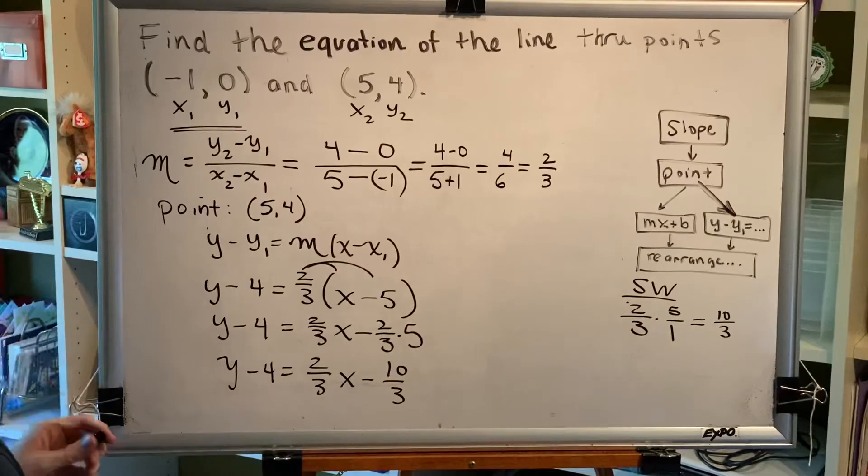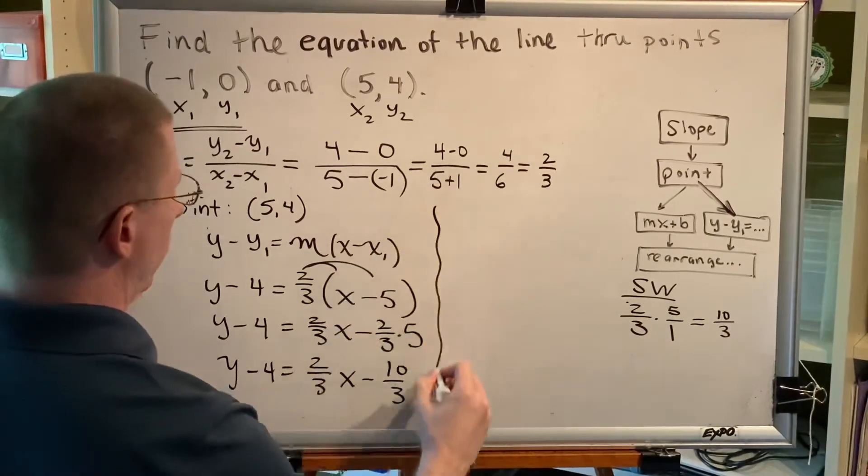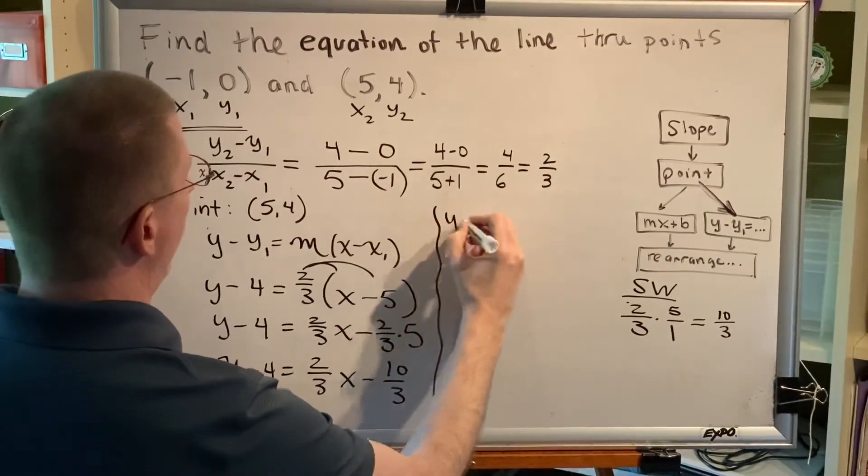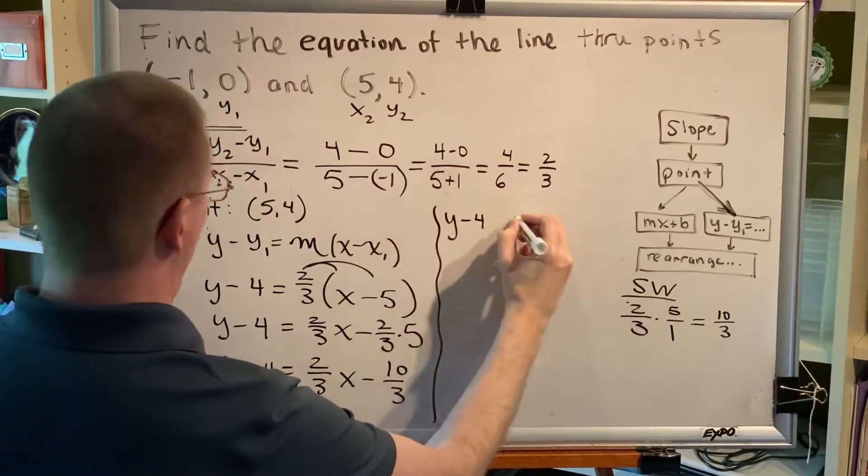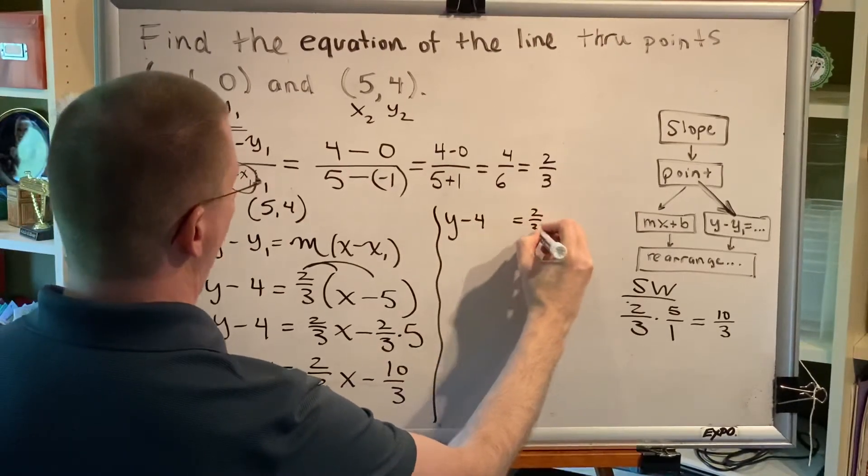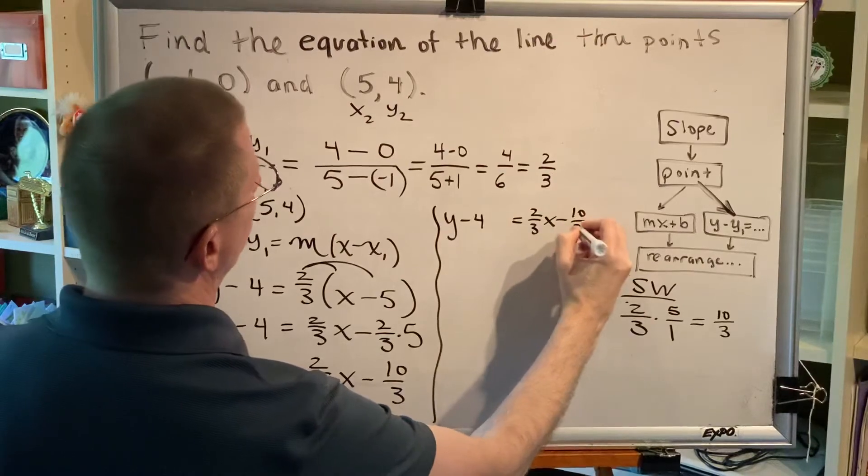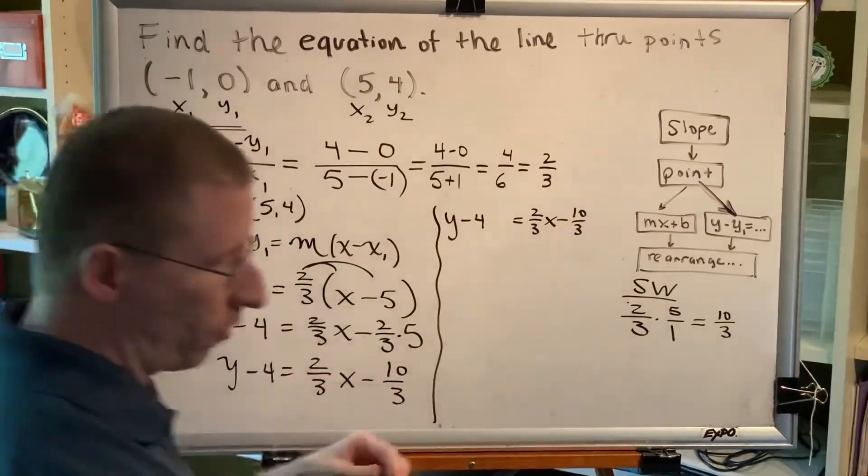Now add 4 to both sides. So y - 4 equals 2/3 x minus 10/3 and we're going to add 4 on both sides.